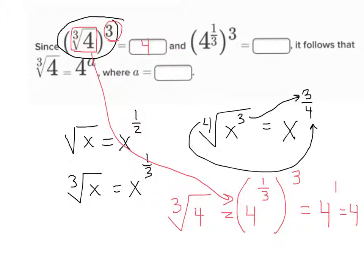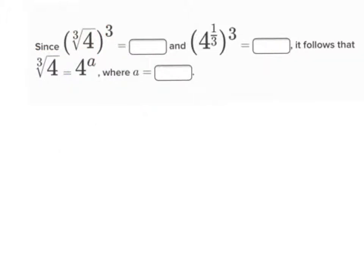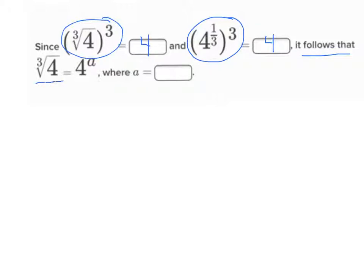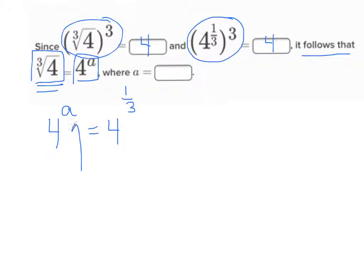Now it says four to the one-third power cubed — well, that's what we just got done doing, so it's also going to be four. Now, if you look at this one, it wants to know what a is. We said the cube root of four cubed was four, and four to the one-third cubed was also four, which tells us they're the same thing. It says the cube root of four equals four to the a power. What is the cube root of four the same thing as? Four to the one-third power. So a is going to equal one-third. In this blank, I'd put one-third.